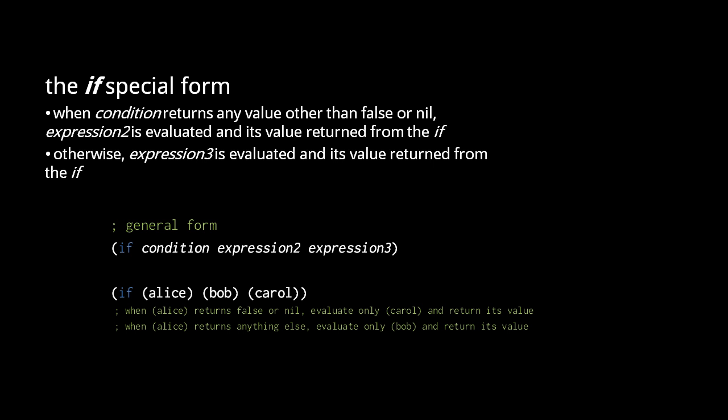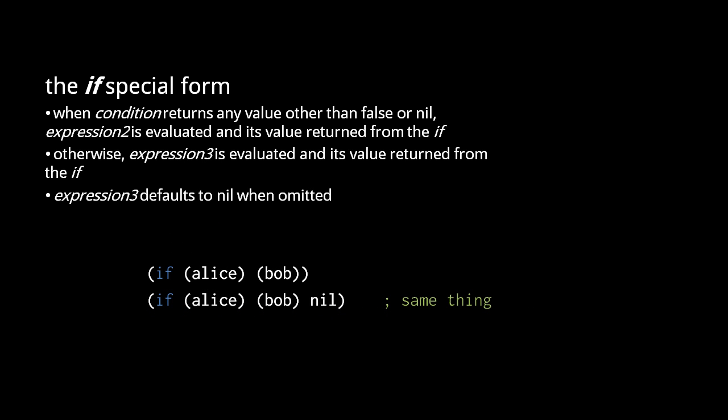So here, when Alice returns false or nil, the if evaluates Carol and returns its value. When Alice returns anything else other than false or nil, the if evaluates Bob and returns its value. As a convenience, you can omit the third expression of an if, in which case it will default to nil.